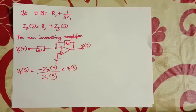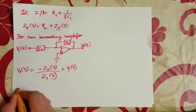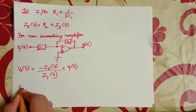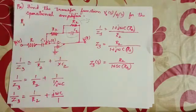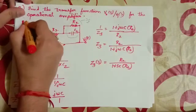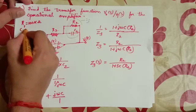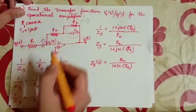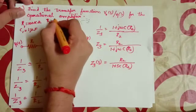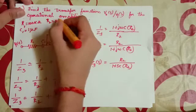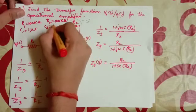This can be written directly because the given circuit is an inverting amplifier, or you can follow the procedure shown in the previous videos to get the transfer function. The component values are: R1 is 100k ohm, C1 is 1 μF, R2 is 100k ohm, and C2 is 1 μF.